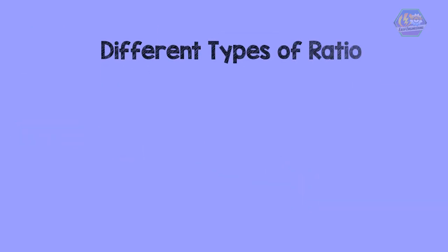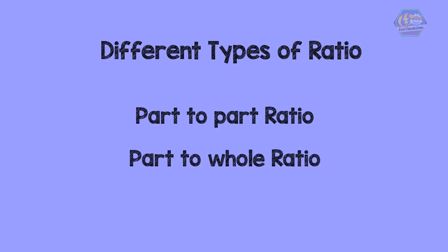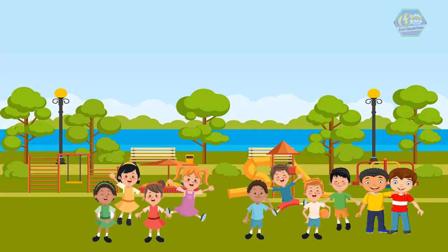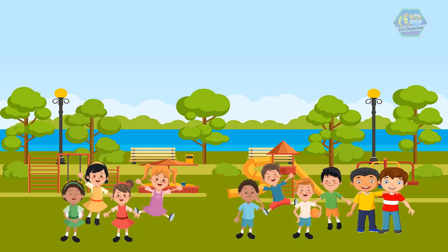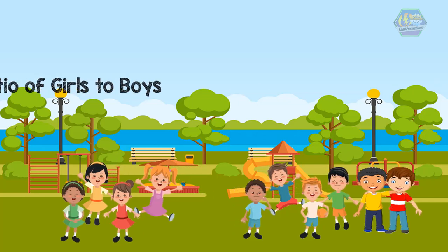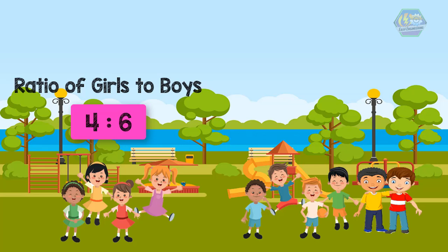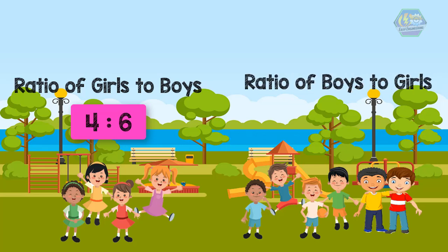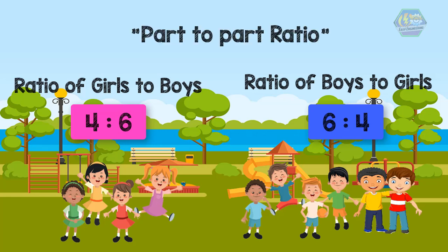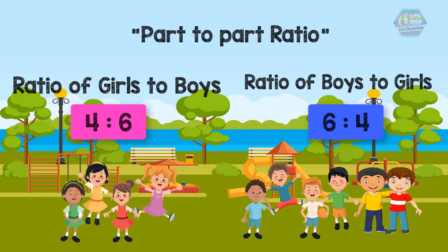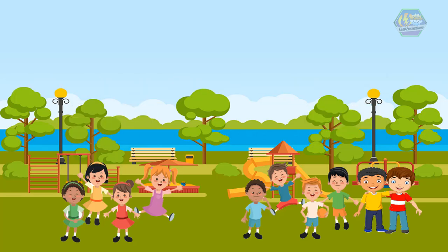There are also different types of ratio: the part-to-part ratio and the part-to-whole ratio. To understand these, let's take a look at this example. There are 10 children at the park — 4 are girls and 6 are boys. So the ratio of girls to boys is 4 is to 6, and the ratio of boys to girls is 6 is to 4. These ratios are examples of a part-to-part ratio.